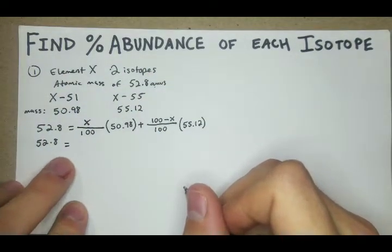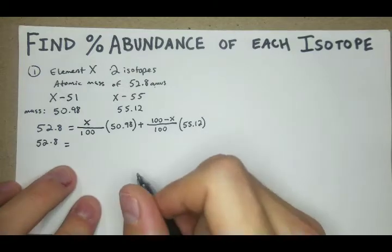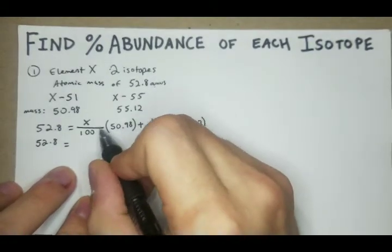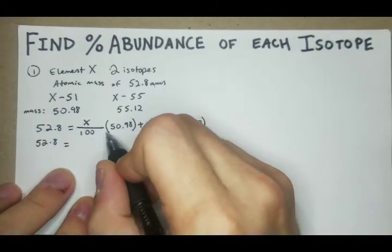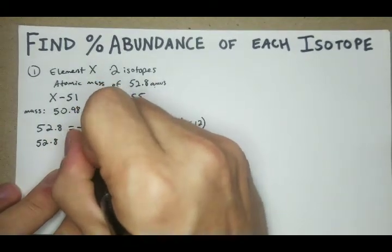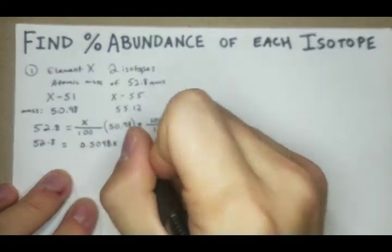In this case, we have the 52.8, and it's going to end up being 50.98X divided by 100. We can just preemptively do that. It's going to be 0.5098X plus.